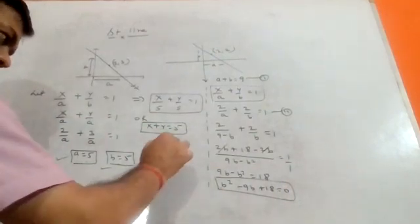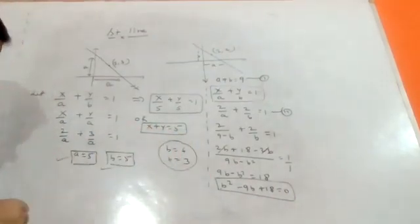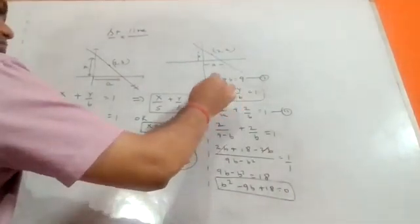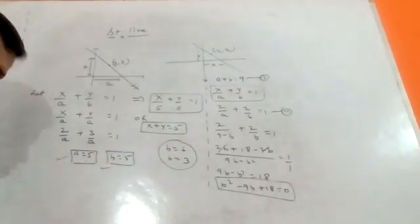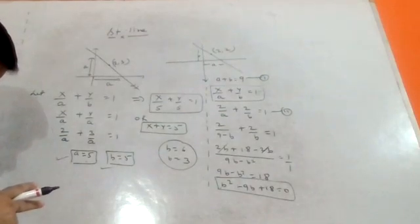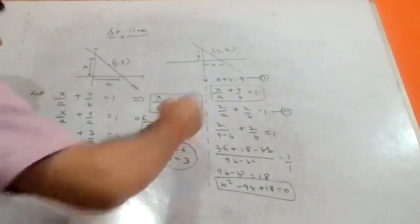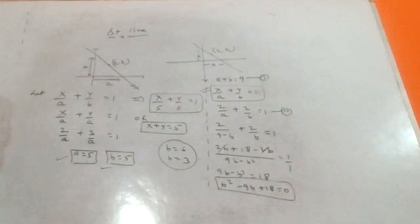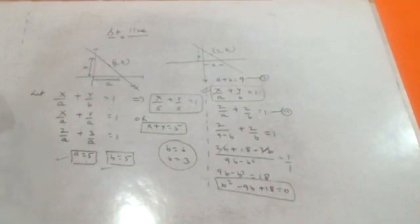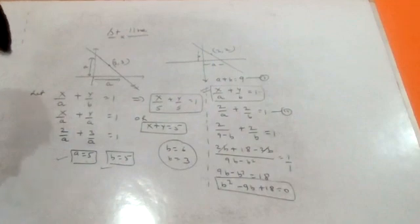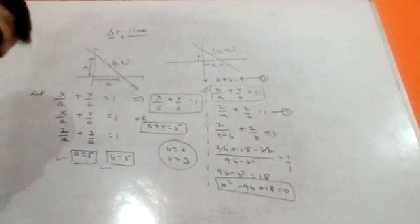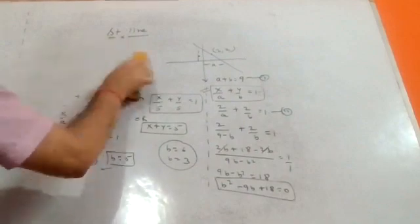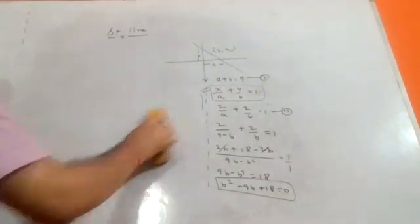Solving the quadratic, b equals six or b equals three. So there will be two lines passing through two comma two which make intercepts on the x and y axes where the sum a plus b equals nine. There are two possible line equations.